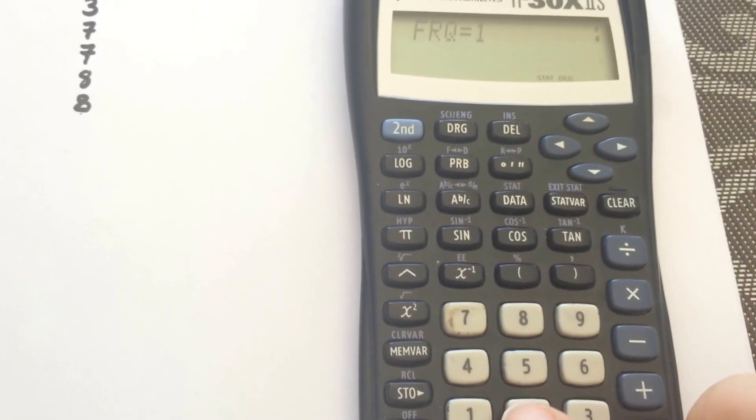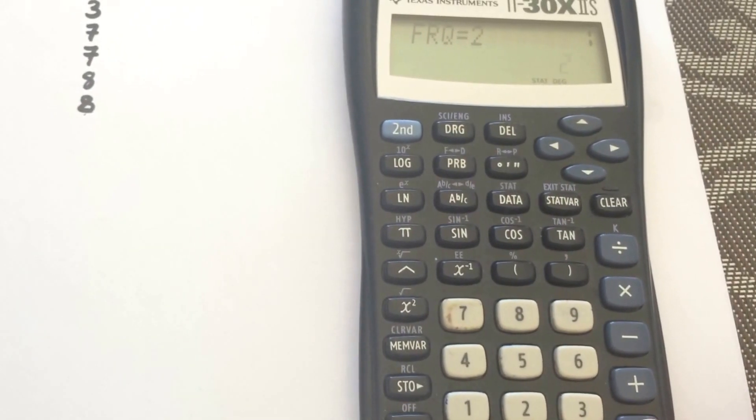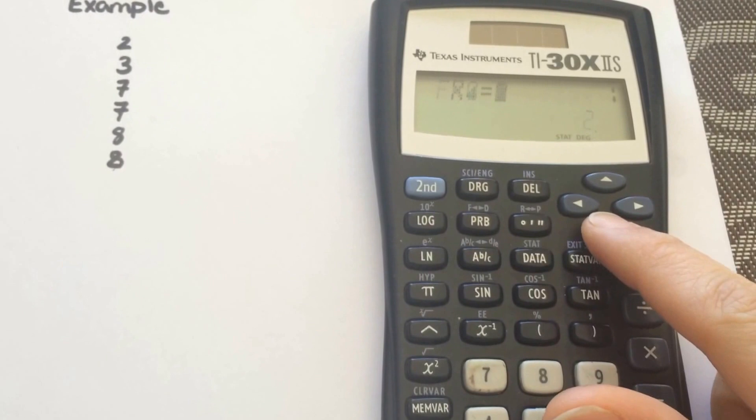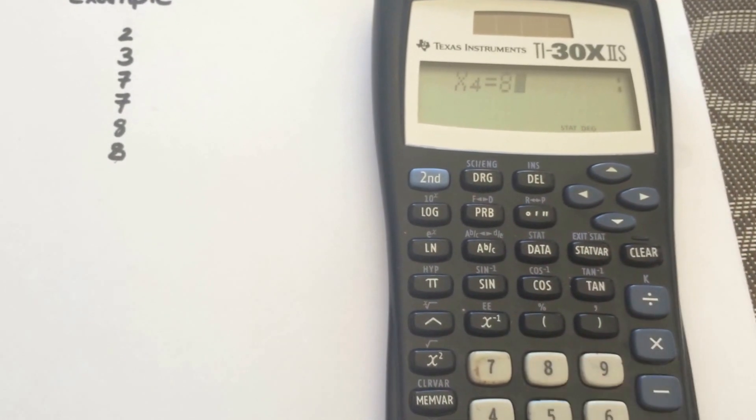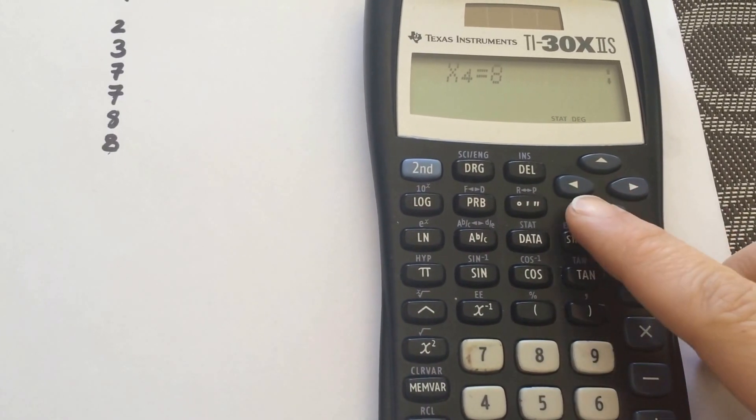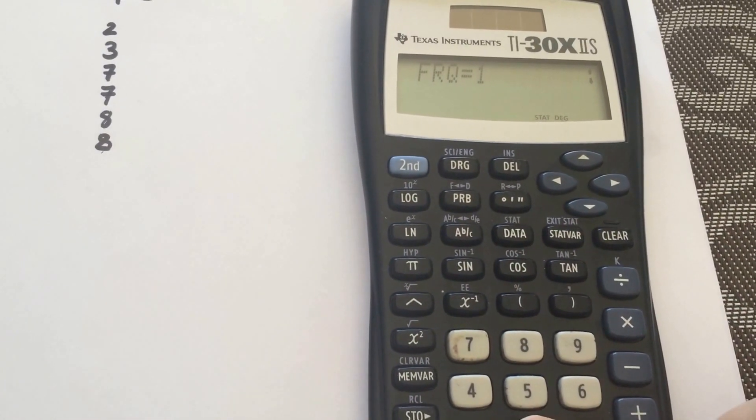Scroll down and select 2. Hit equals. Now scroll down again for the last one, which is 8. And again for 8, I have 2 of them. So I'm going to enter in 2 for frequency.